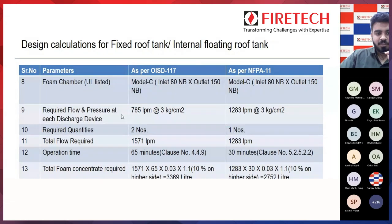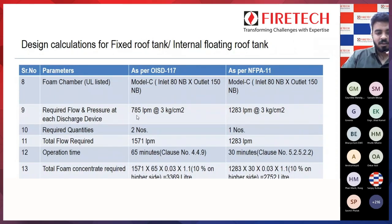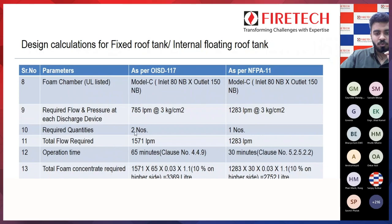The required flow and pressure for each discharge device: as per manufacturer standards, the discharge device operates from 3 bar to 7 bar. We take the minimum pressure, so it is 785.5 lpm at 3 kg/cm² for OSD 117 (with 2 devices required), and 1283 lpm at 3 kg/cm² for NFPA 11 (with 1 device required).